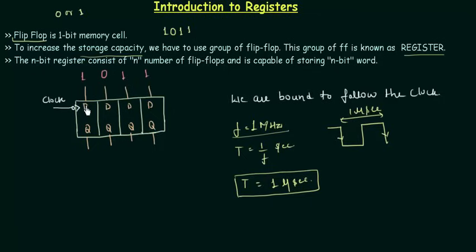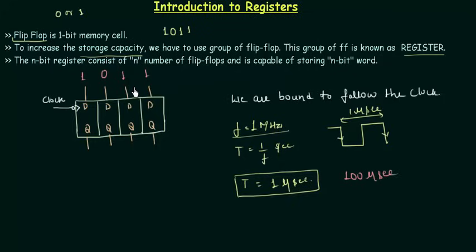So after every 1 microsecond, whatever is stored in the flip-flops will get changed. For example, if I want to store 1011, I give those values as inputs to the four flip-flops, but when the next falling edge arrives the value will change — which we don't want. If I want to store data for 100 microseconds, but the data changes every 1 microsecond, then our data is corrupted. We are losing what we want to store. That's why we need some independent control.